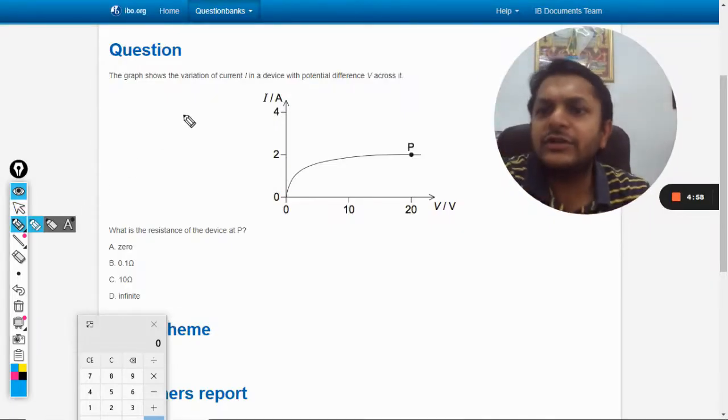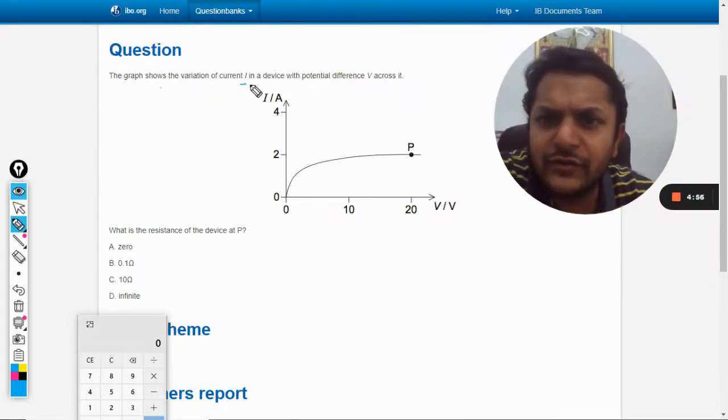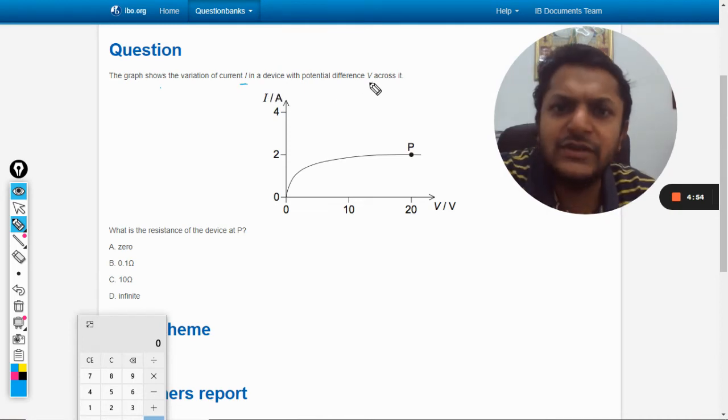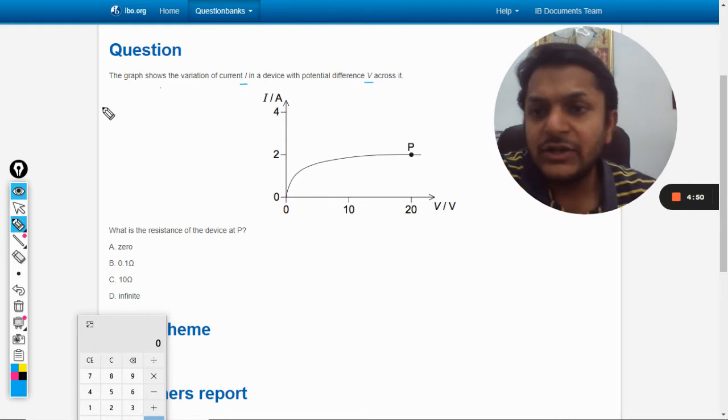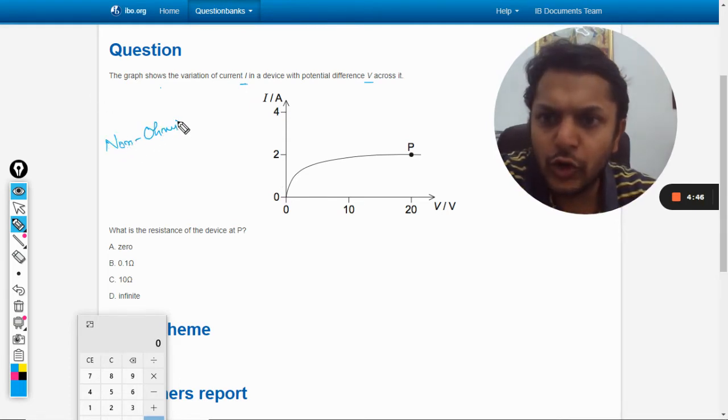Okay, let us see this question. The graph shows the variation of current I in a device with the potential difference V across it. The graph is variable, so this is the case of a non-ohmic conductor. Ohm's law is not valid.